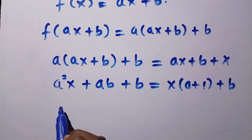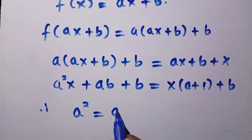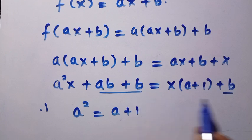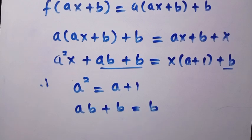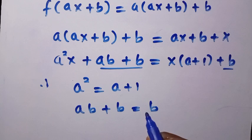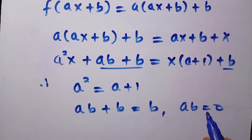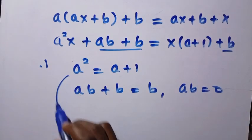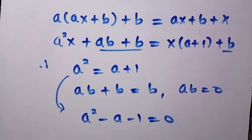Comparing the x coefficients: a² = a + 1. Comparing the constant terms: ab + b = b, which simplifies to ab = 0. Since a = 0 or b = 0, and x > 0 means a cannot be zero, we set b = 0 and solve only a² = a + 1, giving a² − a − 1 = 0.